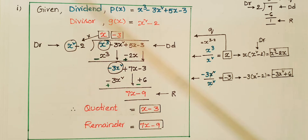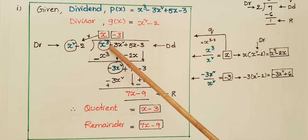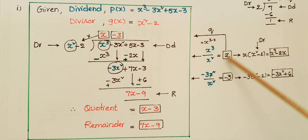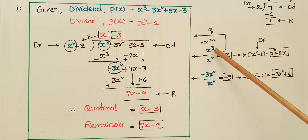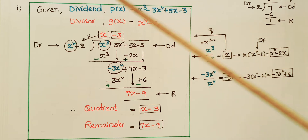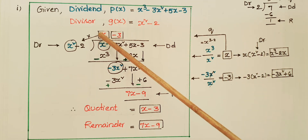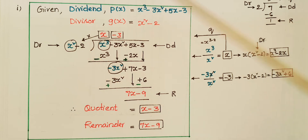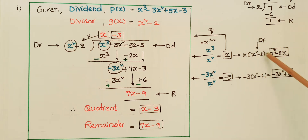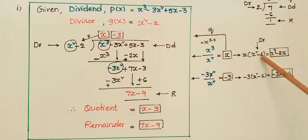Divide x³ by x² — you get x, because a^m divided by a^n equals a^(m-n). Write x at the quotient place. Then multiply x with (x² - 2): x times x² is x³, and x times 2 is 2x, giving x³ - 2x.